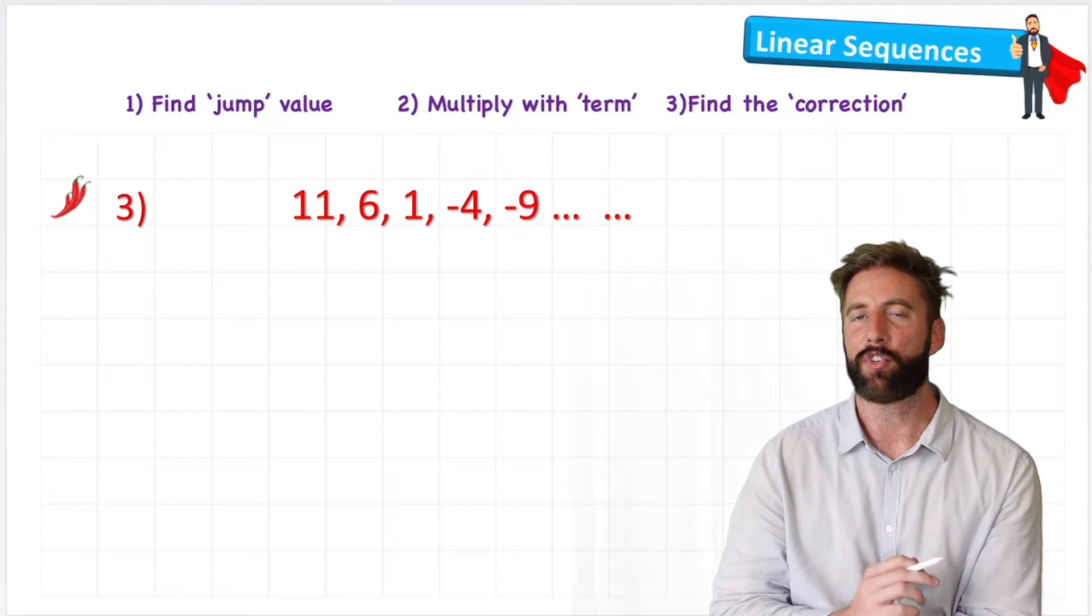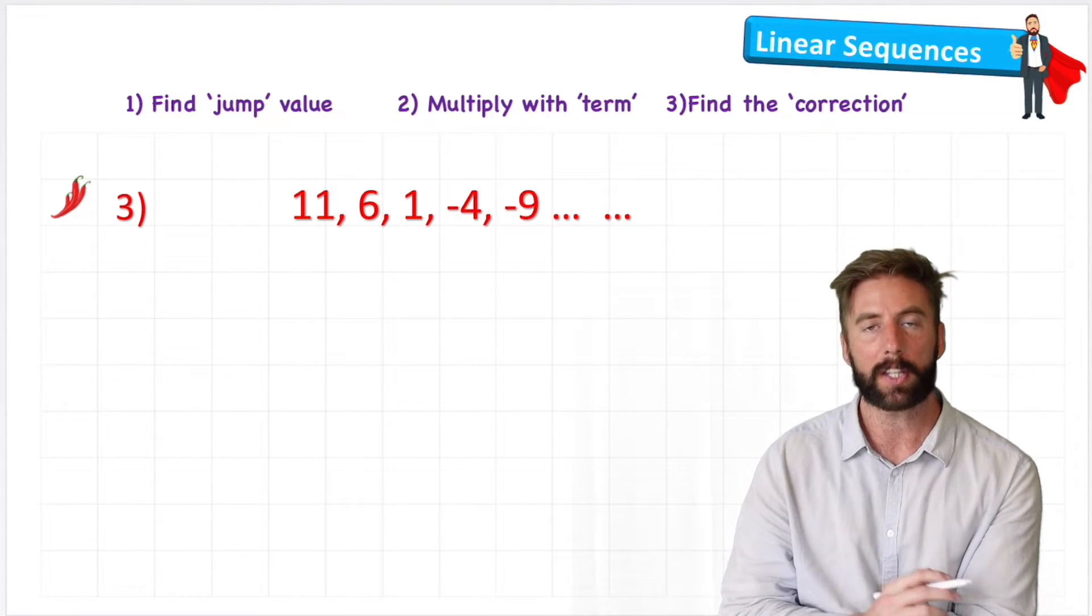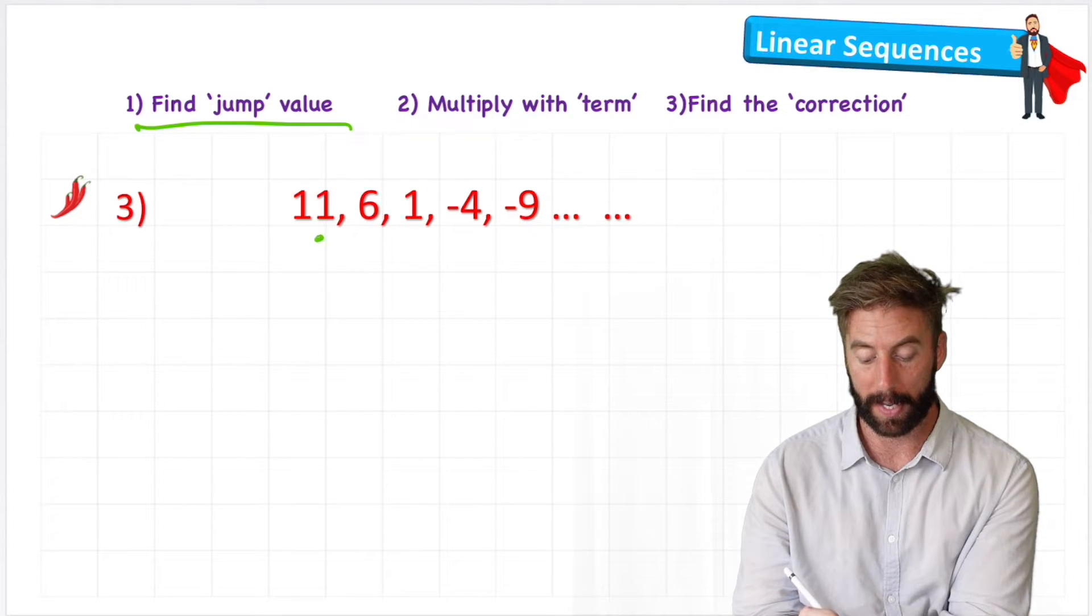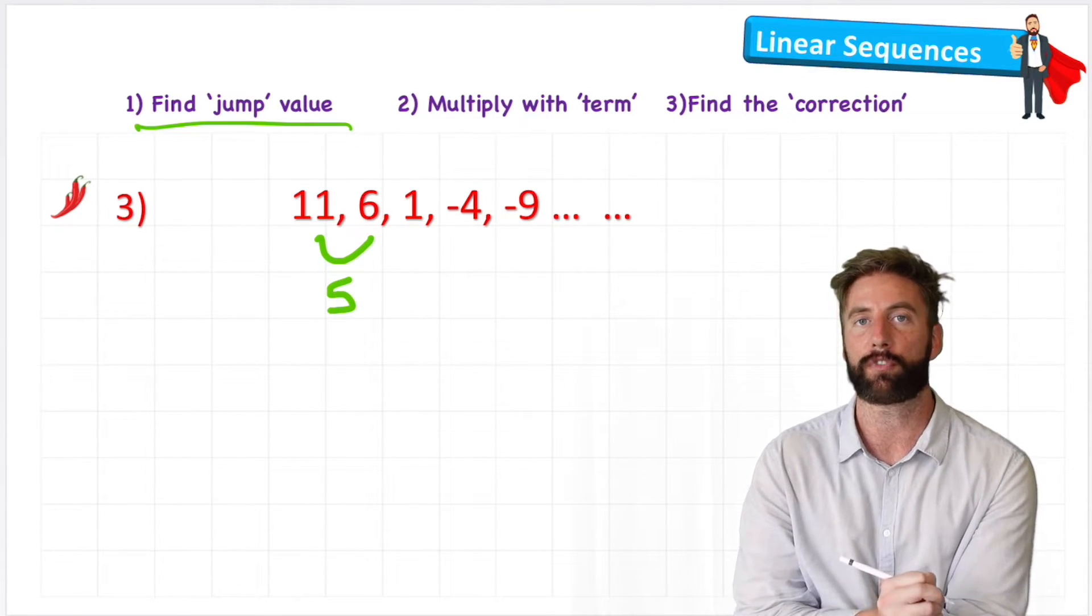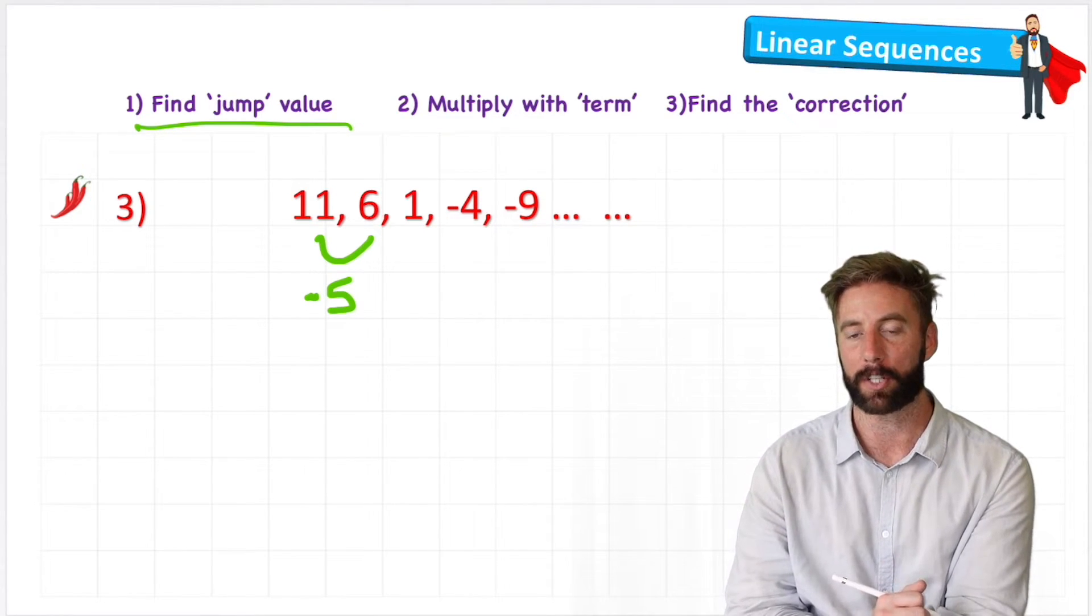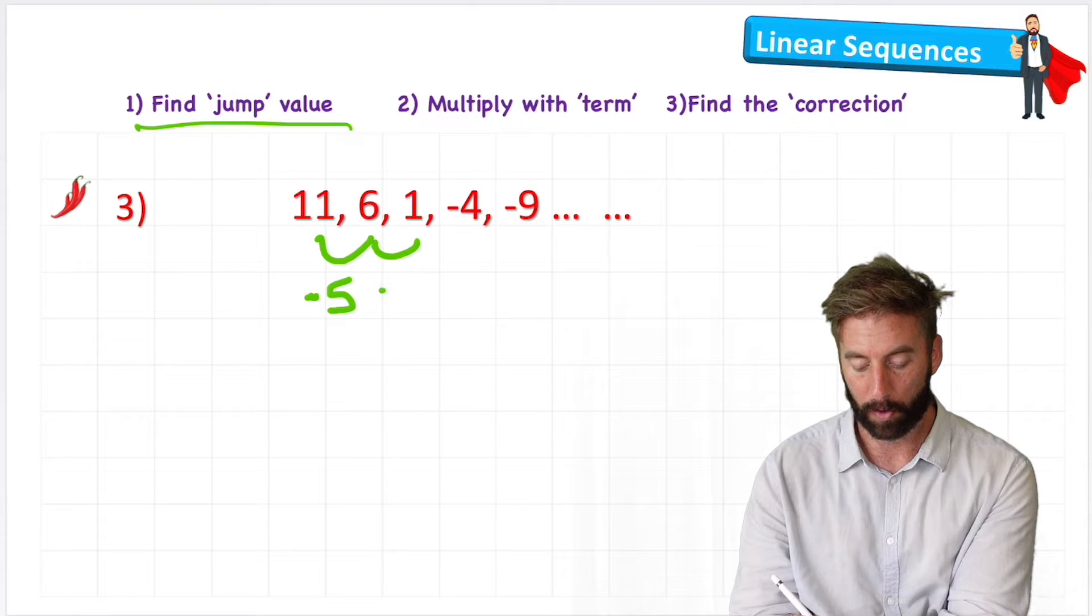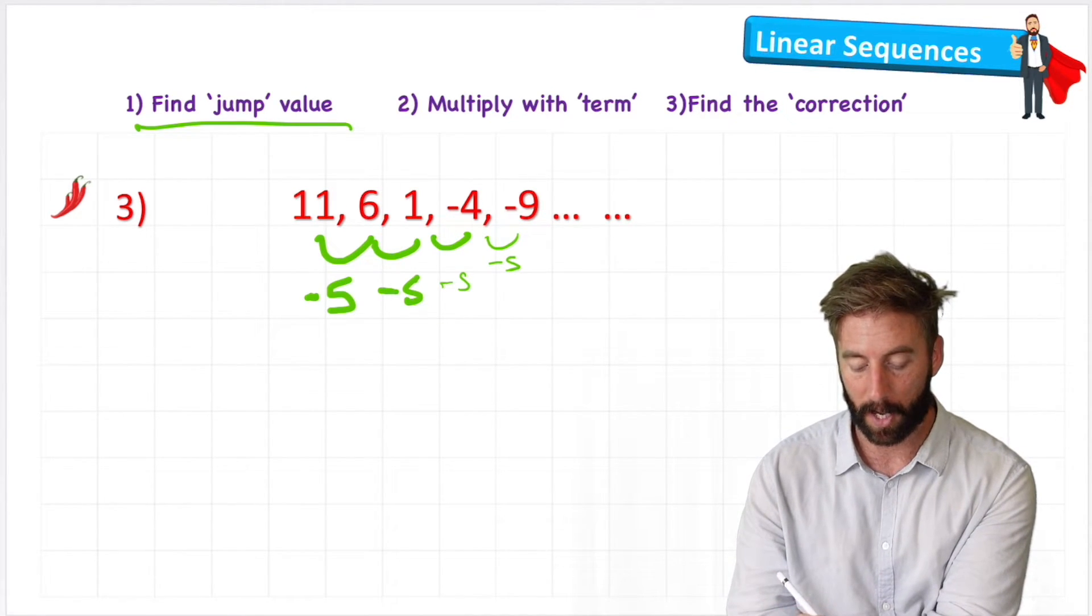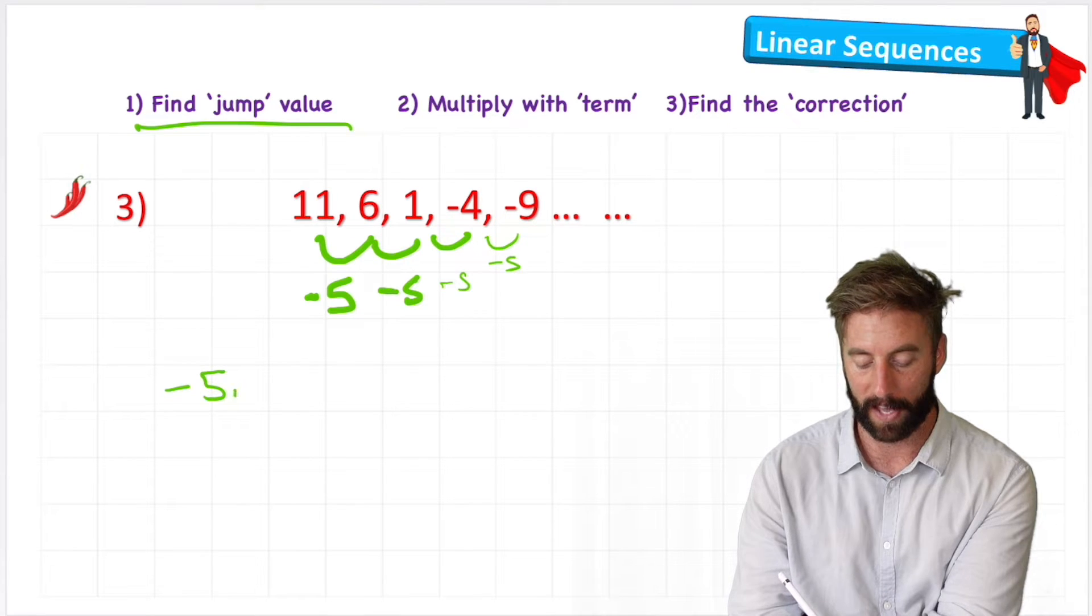Let's have a look at a really challenging one. So first thing we're going to do is find our jump value again. So what's the difference between 11 and 6? Well, it's 5, but it's not just 5. It's negative 5 because we're now descending our numbers. What's the difference between 6 and 1? Also negative 5. 1 and minus 4, negative 5. Minus 4 and minus 9, also negative 5. So the start of my formula this time is going to be negative 5n.